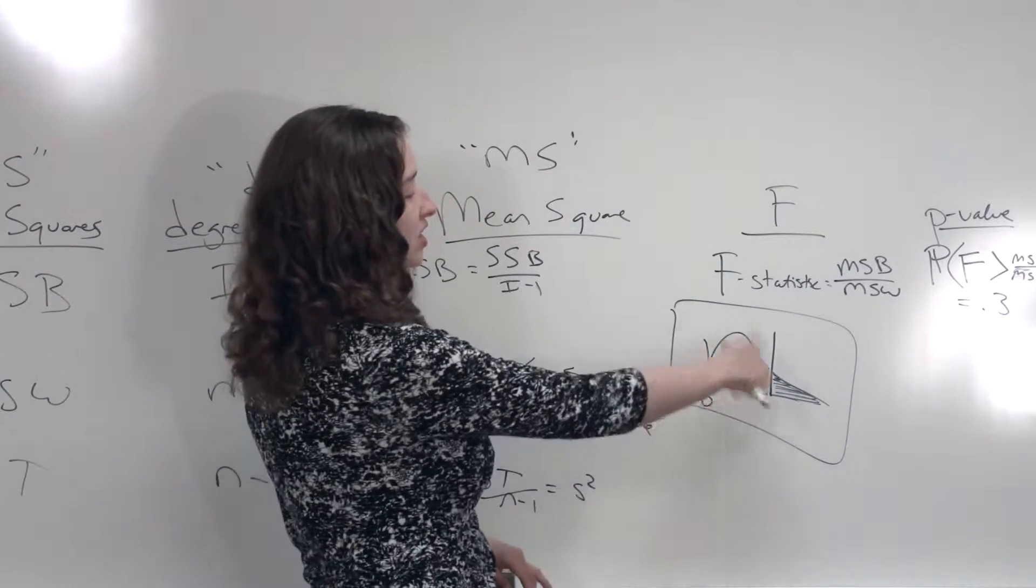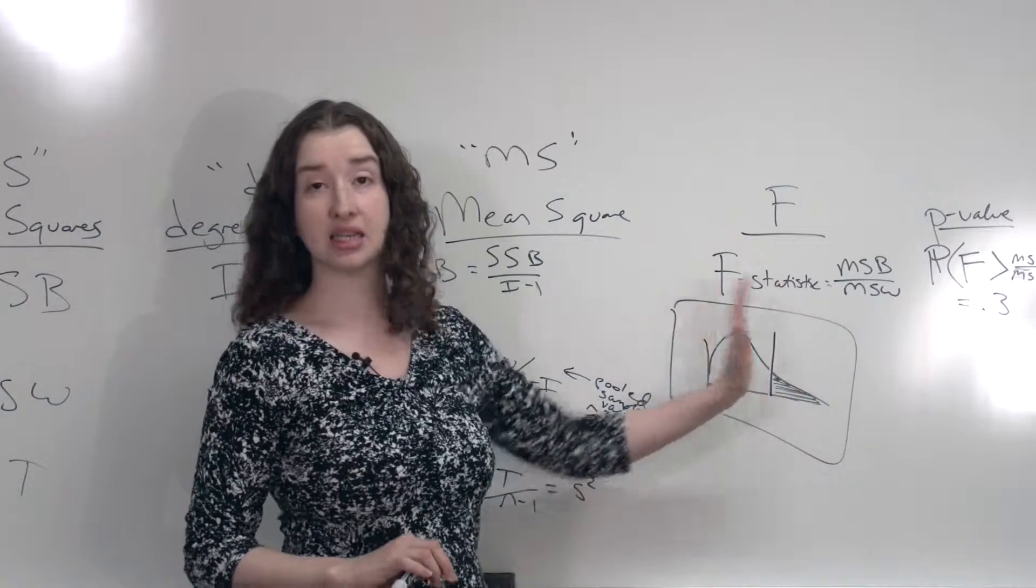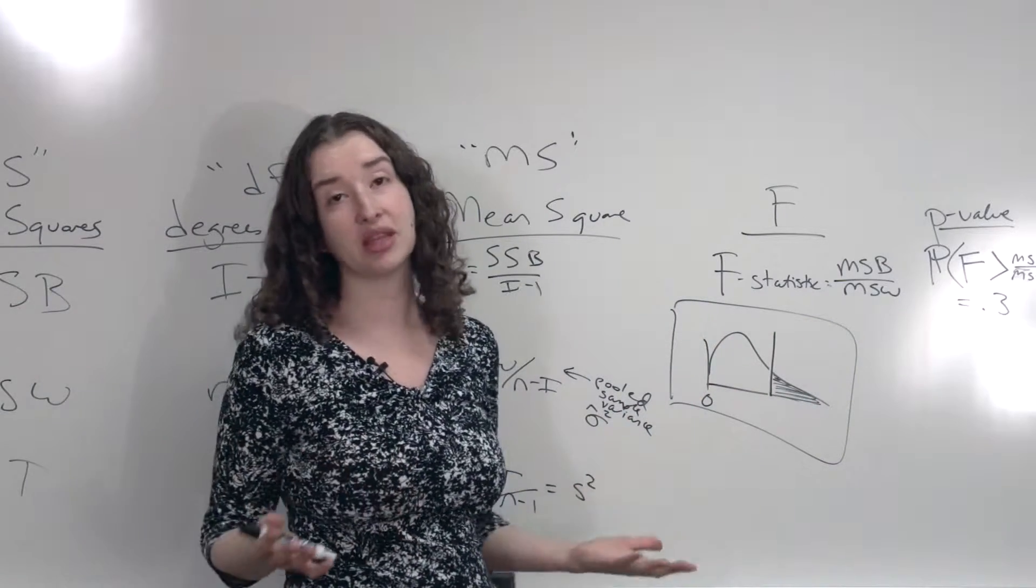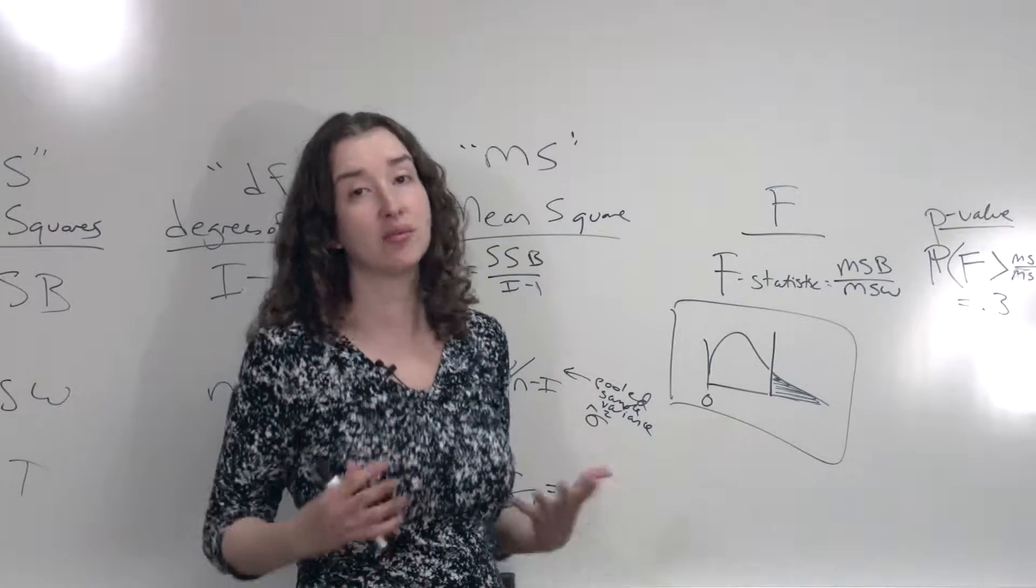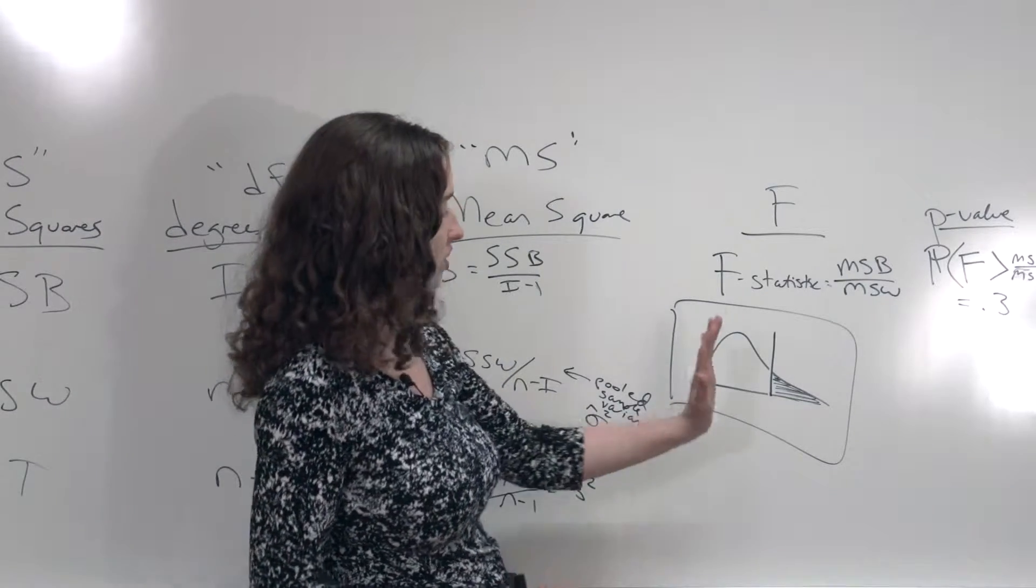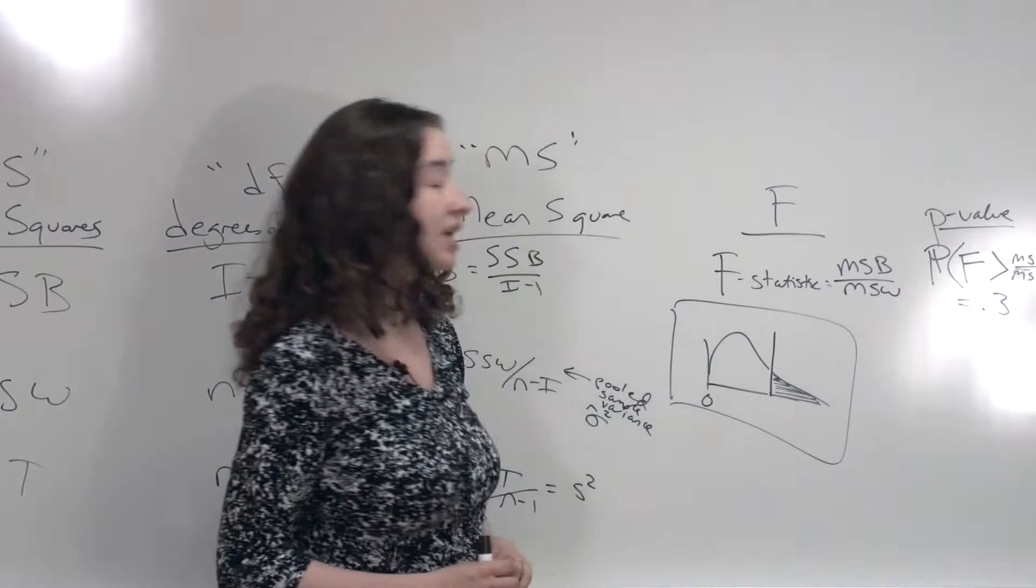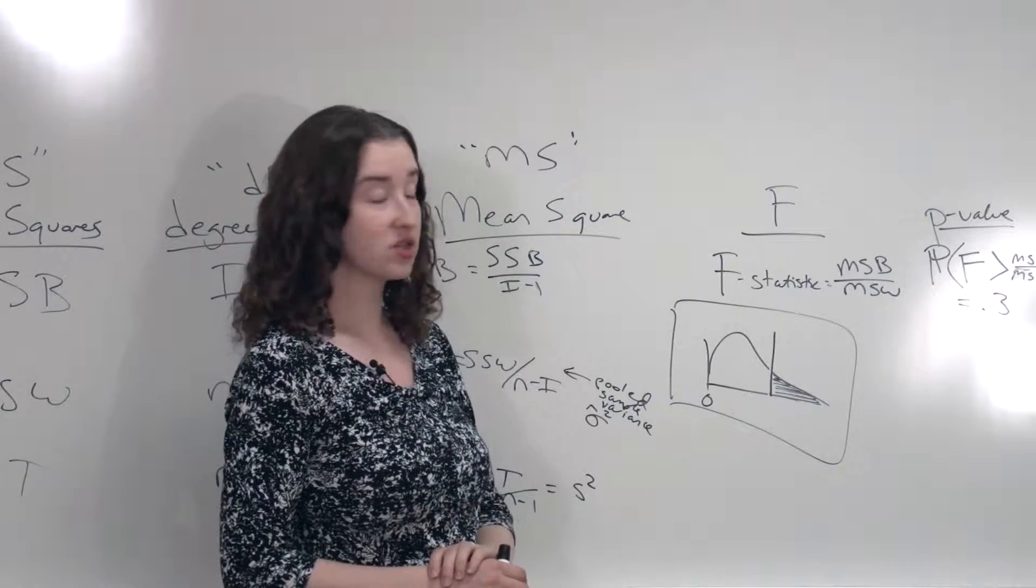F-distributions will always look something like this. They'll always be positive. Given the way I calculated these numbers, we couldn't get something negative. The sums of squares will never be negative. So no matter what you divide them by, they'll never be negative. So only positive values are possible for f-statistics or f-distributions.